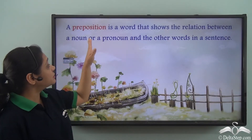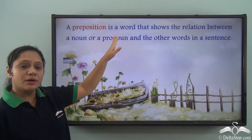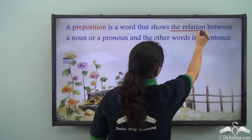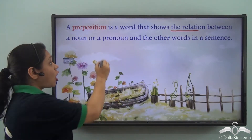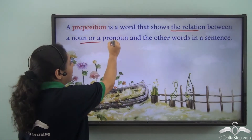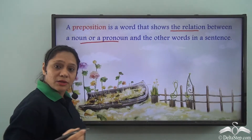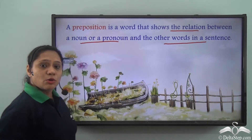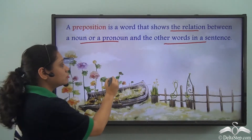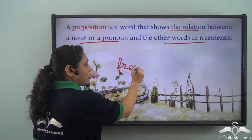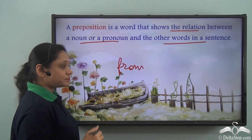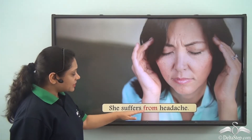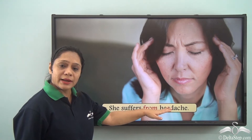We know that a preposition is a word that shows the relation between a noun or a pronoun and the other words in a sentence. Let us look at a few uses of the preposition 'from'.